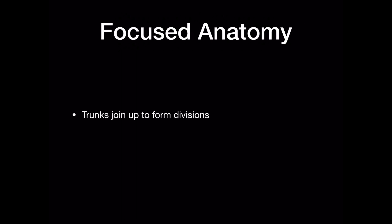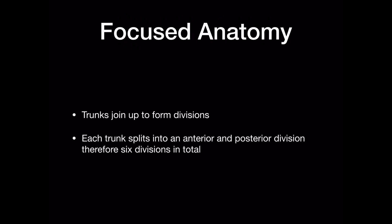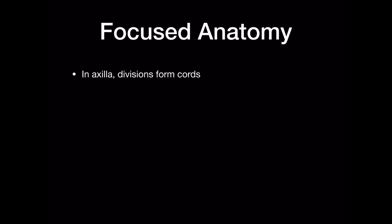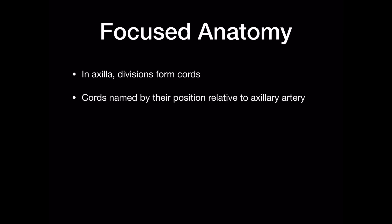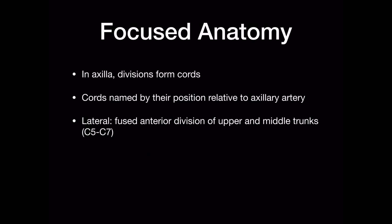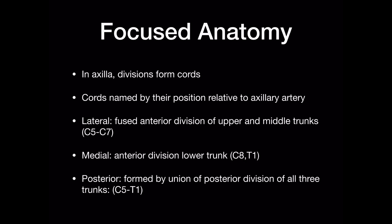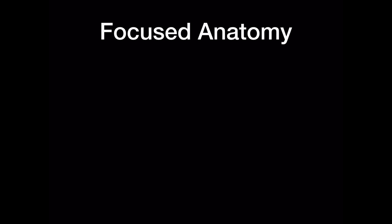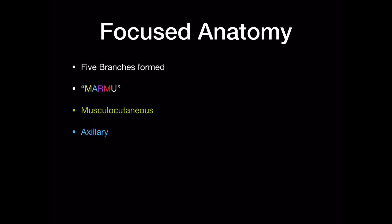The trunks then join up to form divisions, and each trunk splits into an anterior and posterior division, so there are six divisions in total. Once the plexus reaches the axilla, the divisions form the cords, which are named by their position relative to the axillary artery. The lateral cord is the fused anterior division of the upper and middle trunks, covering roots C5 to C7. The medial cord is the anterior division of the lower trunk, covering C8 and T1. The posterior cord is formed by the union of the posterior divisions of all three trunks, covering roots C5 to T1. From this, the five branches are formed: the musculocutaneous, axillary, radial, median and ulnar — remembered using the mnemonic 'MARMU'.